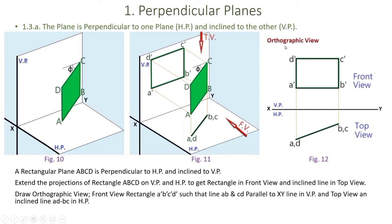Drawing in orthographic view: we need a rectangle as the front view. We measure the distance from A-dash to the reference line XY, copy that dimension from XY to A-dash, draw a line parallel to XY, and complete the rectangle to get the front view. For the top view, which is an inclined line at angle φ, we measure the distance from point B to the reference line, copy that dimension, and draw the inclined top view.